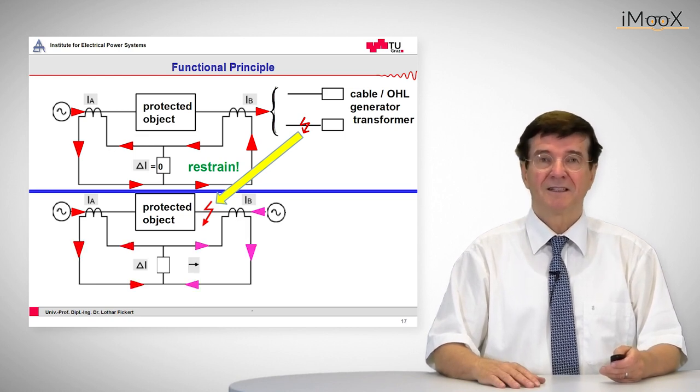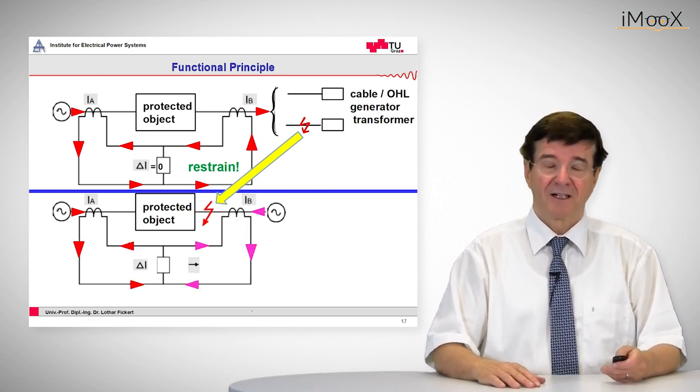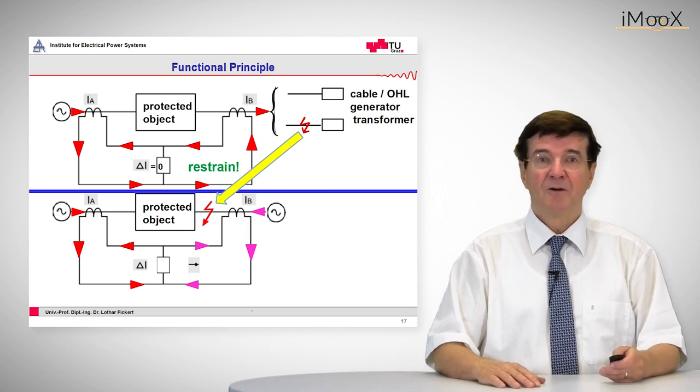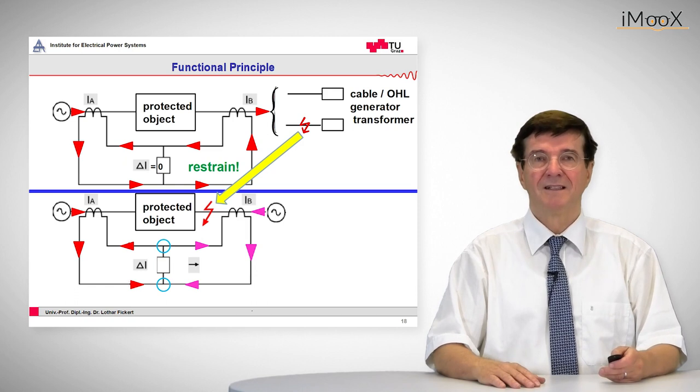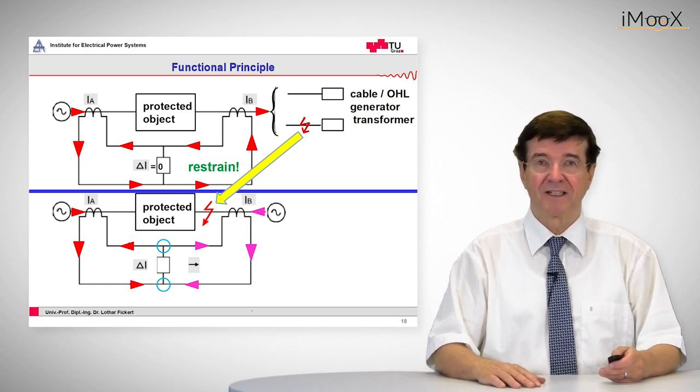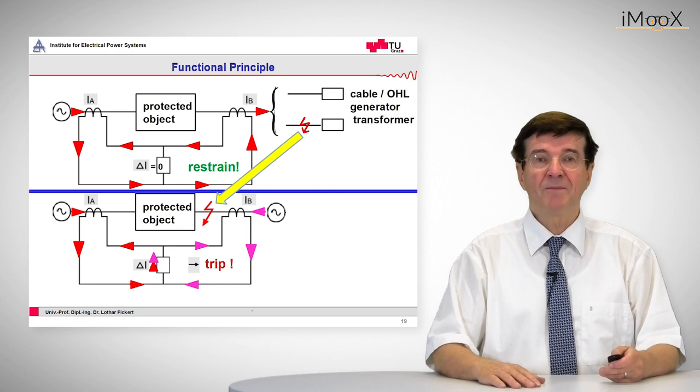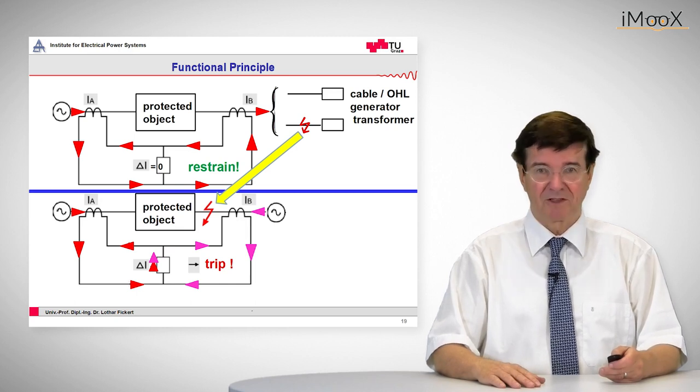And these generate accordingly currents on the secondary side which have opposed polarity. So when these meet at the sensing point of the differential current sensing unit, they add up and we have a trip condition.